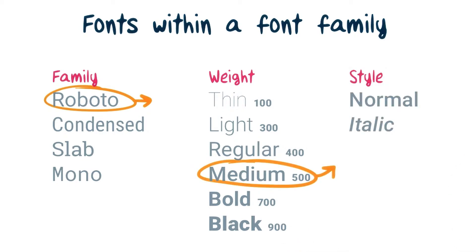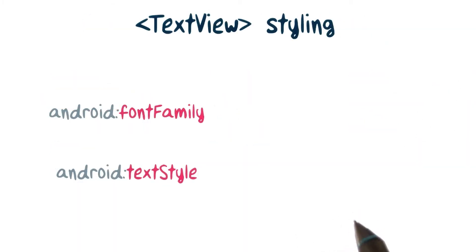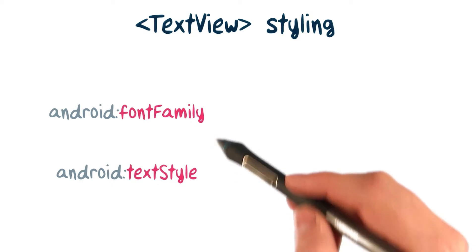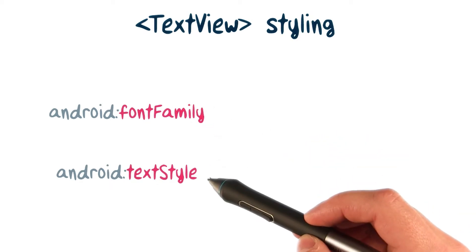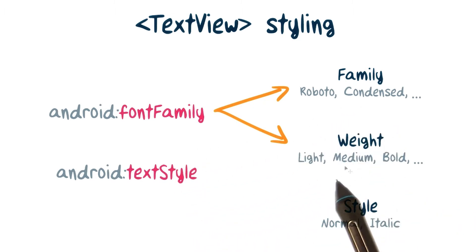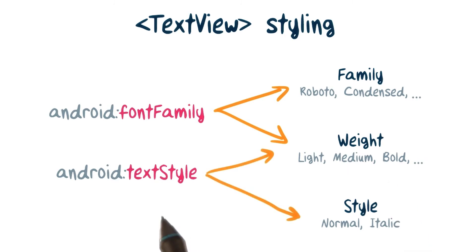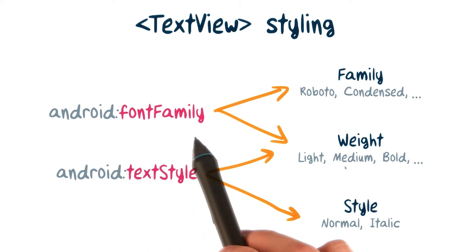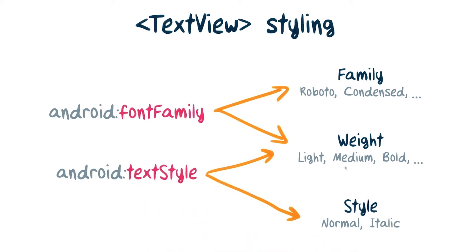Each of these weights normally has a normal and an italic style. When it comes to styling text in Android, the terminology is a little different. If you're using Roboto, text views have two attributes that let you customize the font: font family and text style. Font family lets you choose which family to use and the specific weight, such as thin or light. Text style lets you choose italics, but it also lets you make the text bold. You should generally avoid using text style to make text bold, and instead use the font family attribute, since you'll have more control over the exact weight to use.